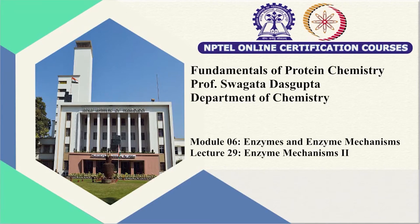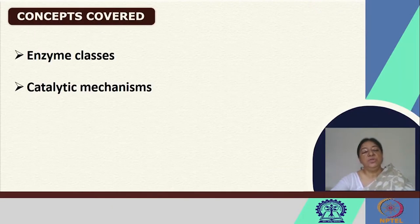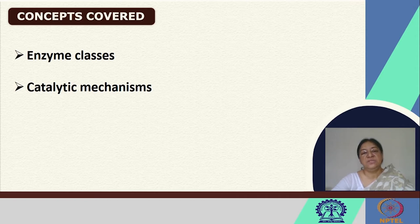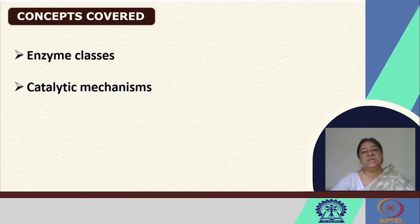In our previous lecture, we looked at enzyme mechanisms in terms of the stability of the enzyme-substrate complex and the importance of the transition state and how the energetics are important in the formation of the product. In this lecture, we are going to look at the different enzyme classes and specific catalytic mechanisms, seeing how specific amino acid residues are involved in acid-base catalysis as proton donors and acceptors, and how the enzyme restores its structure to bind another substrate in a subsequent reaction.